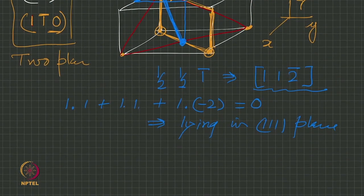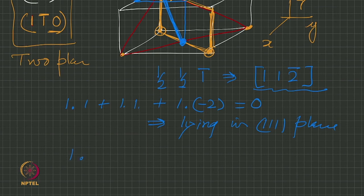Which shows that 1 1 2 bar is lying in 1 1 1 plane. And with the second one 1 into 1 plus minus 1 into 1 plus 0 into minus 2 that also gives you 0. That is a check on a geometrical answer that we have not made any mistake we are on the right track.